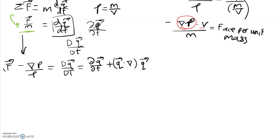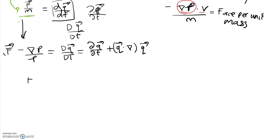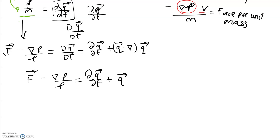So we know that f minus grad p divided by rho equals partial dq/dt plus (q dot nabla) multiplied by q. This is the Euler equation.